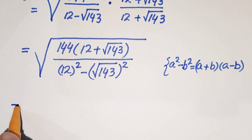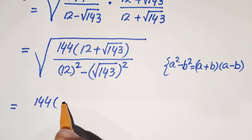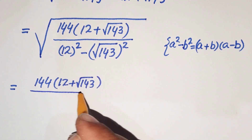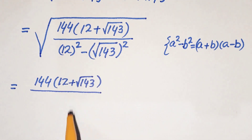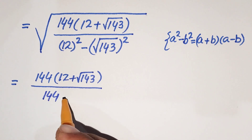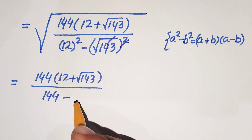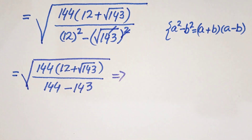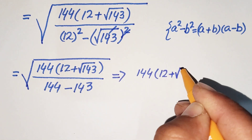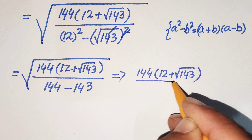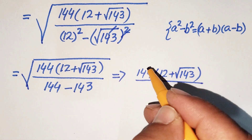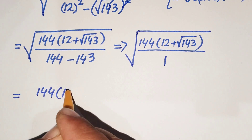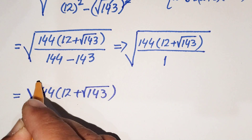Our next step: numerator is 144 times 12 plus square root of 143, all over — 12 squared is 144, minus 143. The square and square root cancel, giving 144 minus 143 which equals 1. So we have square root of 144 times 12 plus square root of 143.